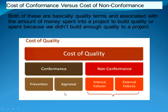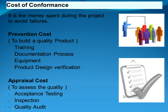Conformance has two types: prevention and appraisal. Non-conformance has two types: internal failure and external failure. Cost of conformance is the money spent during the project to avoid failures. Prevention cost arises from efforts to keep defects from occurring at all — it is the preventive approach. Examples include training, documentation, equipment, and product design verification.